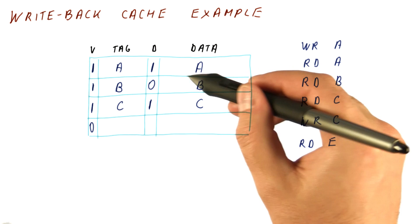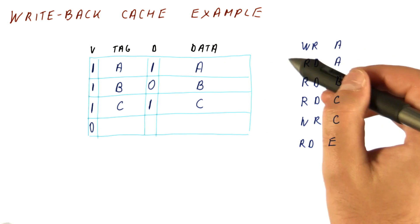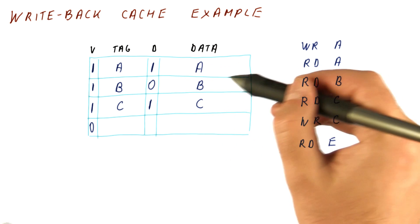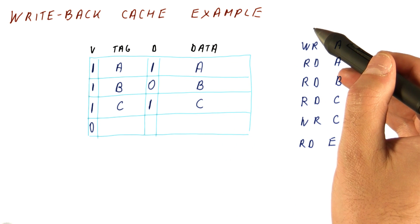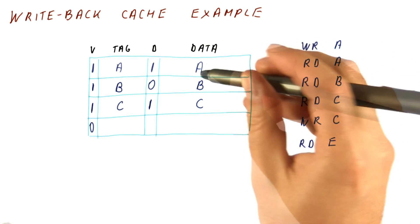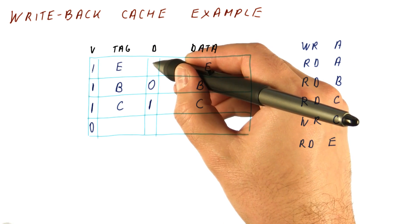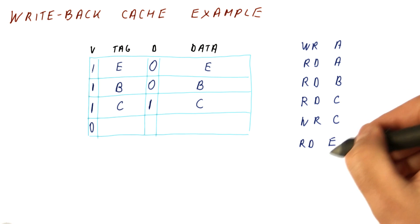First, we have to take the data for A that we have written and not written to memory yet. Because the dirty bit is 1, this block gets sent to memory as a write. After that happens, we can bring E in, set the tag and valid bit and the dirty bit to 0 because it's a read.